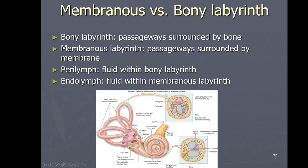An important distinction: the fluid differs between the bony and membranous labyrinth. Within the bony labyrinth we have fluid called perilymph; within the membranous labyrinth it's called endolymph. They are two distinct fluids.